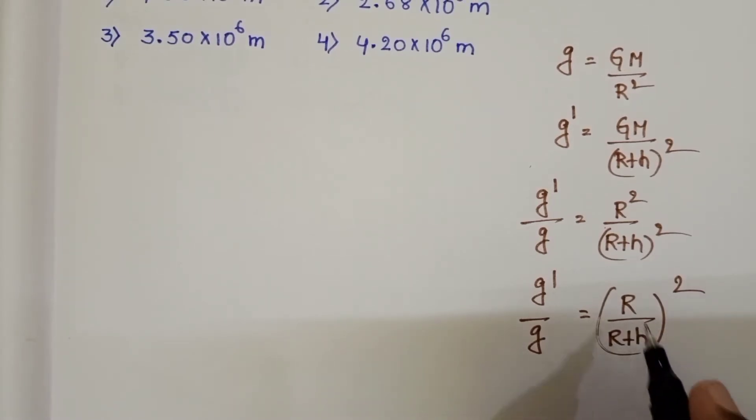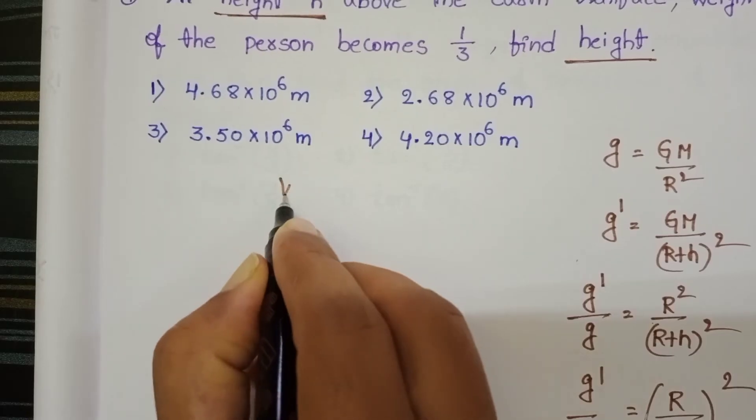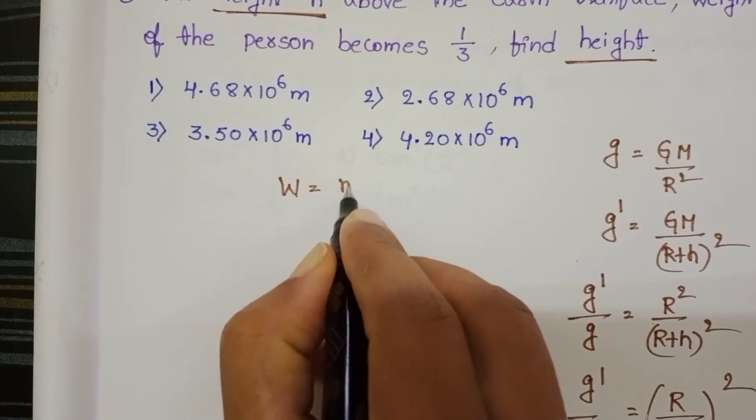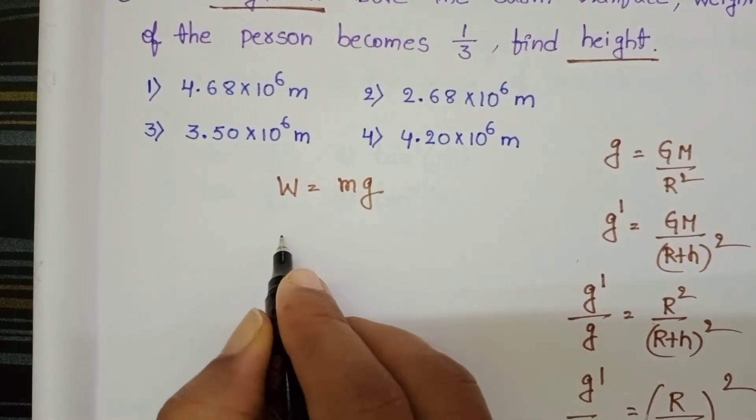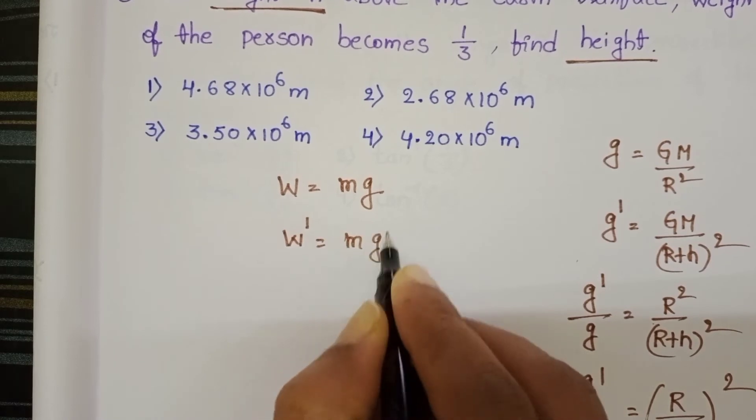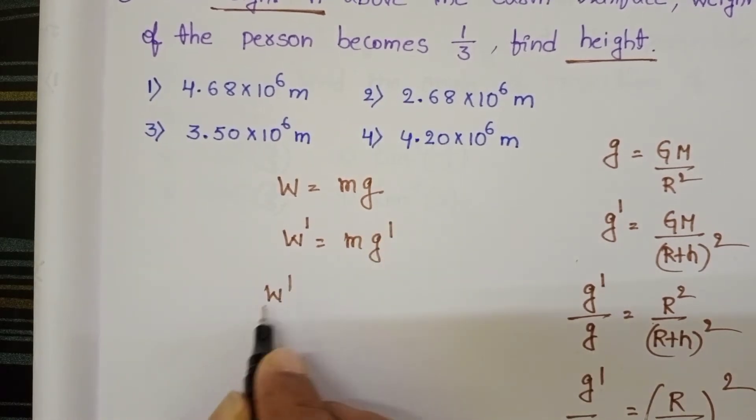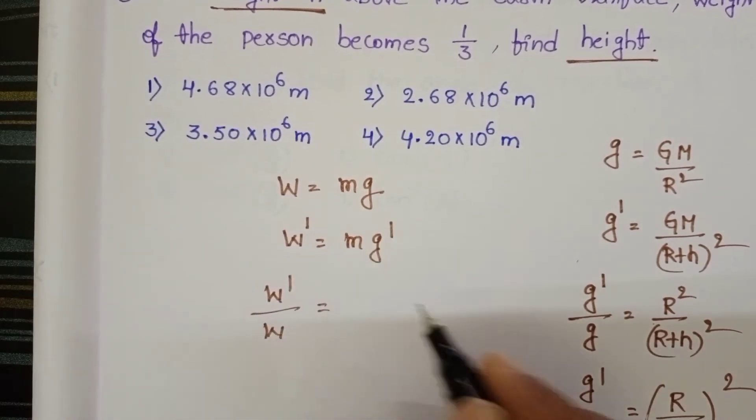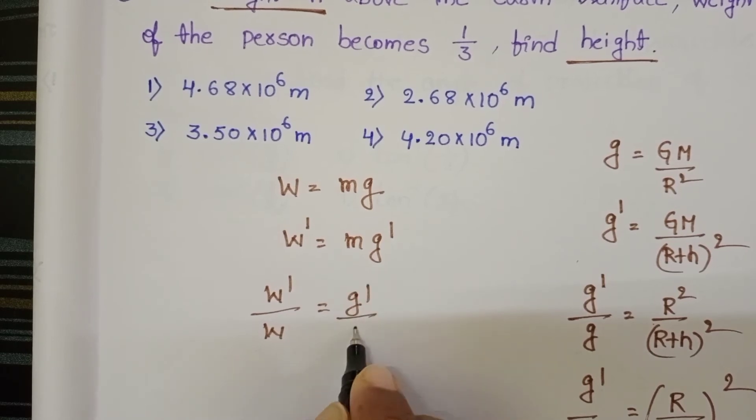Where h is the height and r is the radius of the earth. Let weight of the person w equals mg, and weight of the person at a certain height equals mg dash. Then w dash by w equals g dash by g.